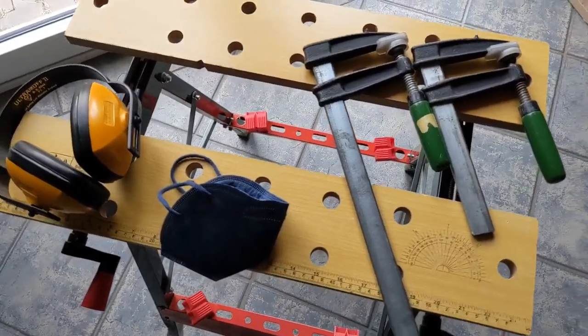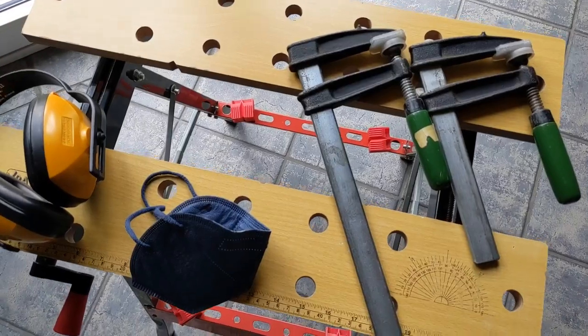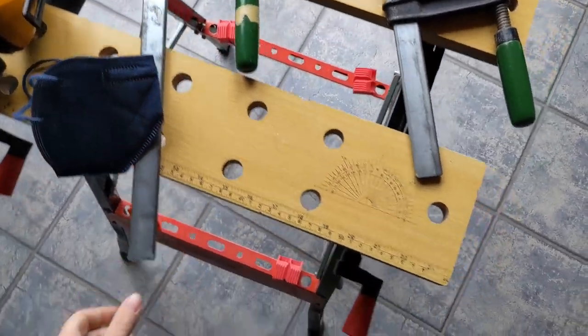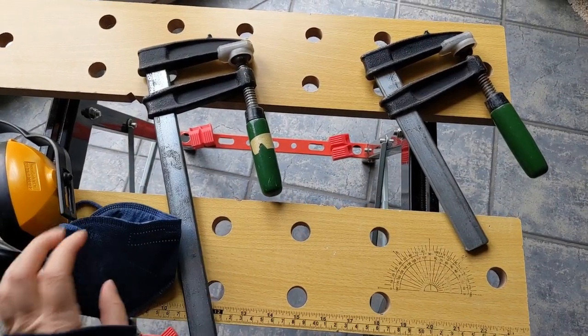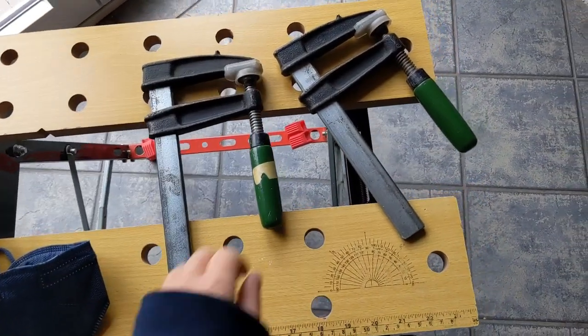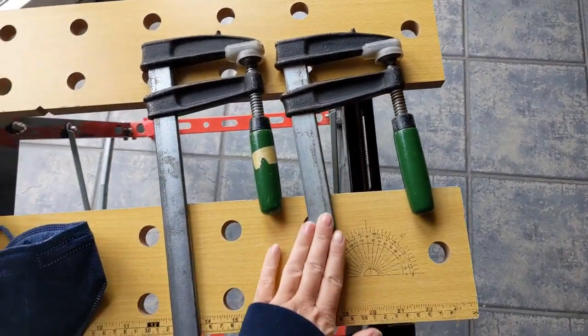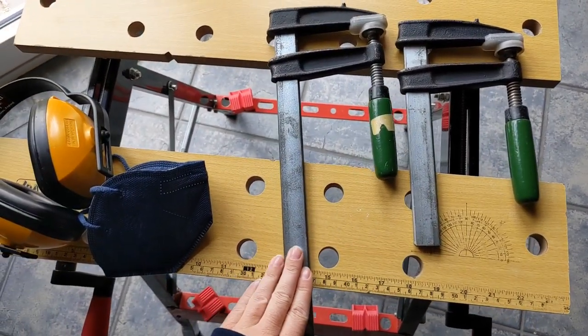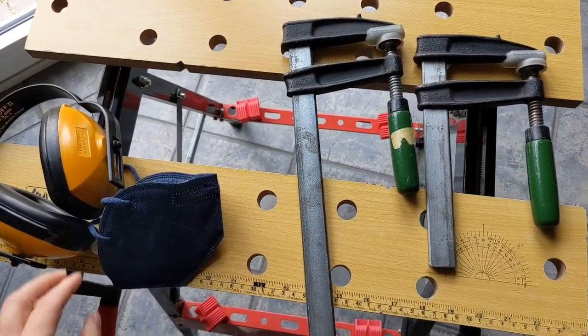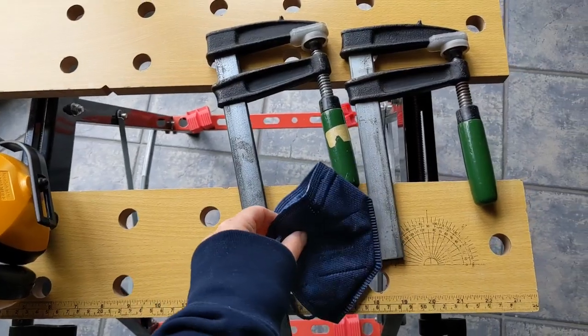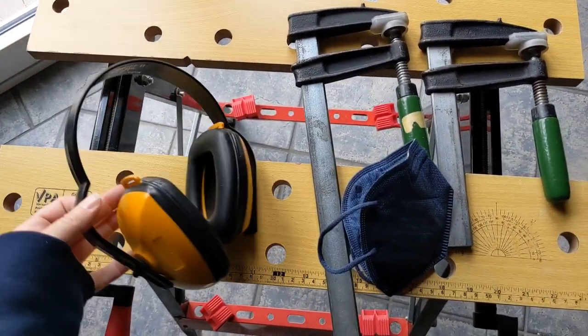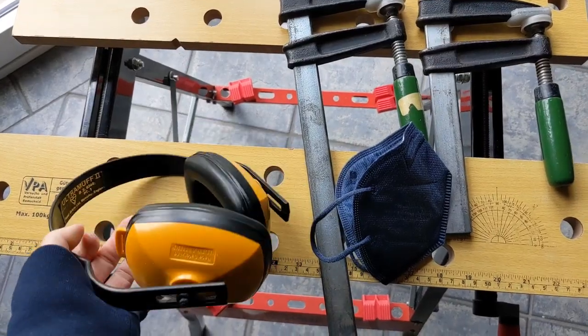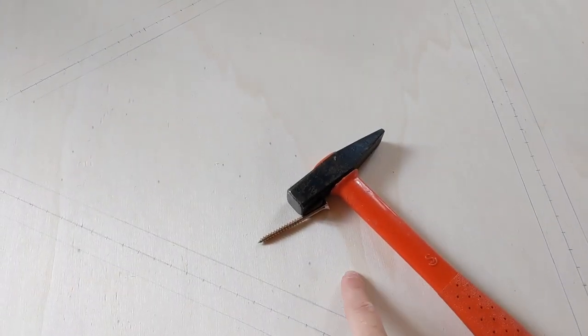I have this little work table which I'll use as a sawhorse. I have these two clamps so I can stabilize the wood, and then I have a mask against breathing in the dust and hearing protection. First I have to make a hole on the inside.